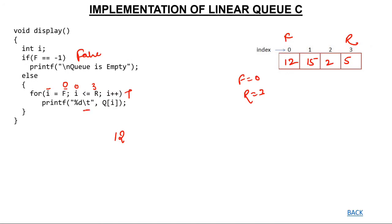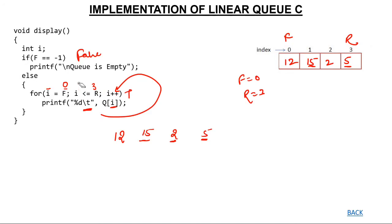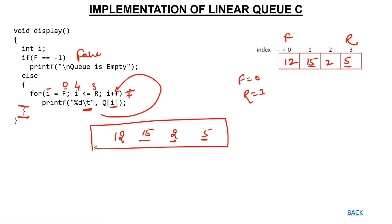i = 0, which is less than 3: print Q[0] = 12. Increment i to 1; 1 < 3: print Q[1] = 15. Increment i to 2; 2 < 3: print Q[2] = 2. Increment i to 3; 3 is not less than 3 — but we also print Q[3] = 5 at i equal to 3 using the loop condition. We come out of the for loop and have printed all elements: 12, 15, 2, and 5. This completes the implementation of the linear queue program in C.